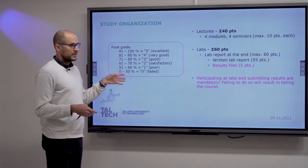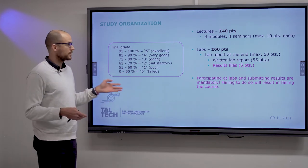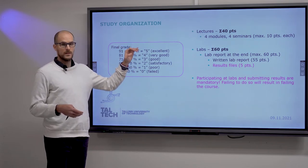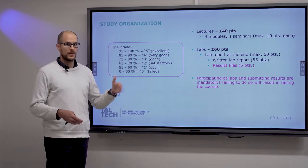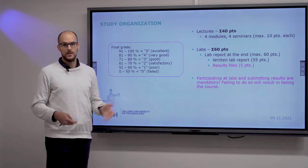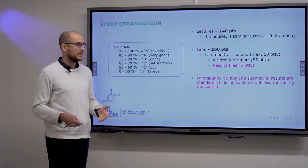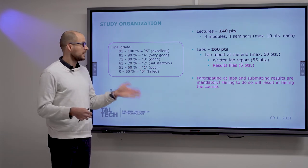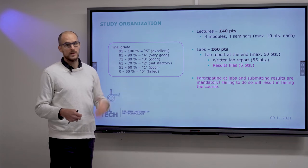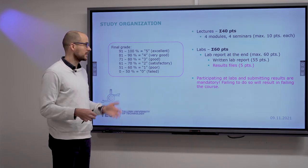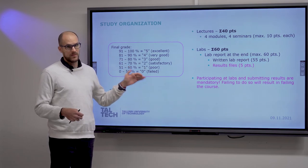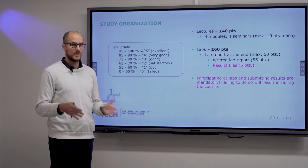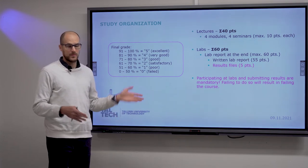Regarding evaluation, we follow the usual one-to-five scale. 40% of the final score comes from lectures, meaning four seminars where you present your own mini review of a topic of your choice from a list we offer — each worth 10 points. The formal labs module gives you 60% of your final grade: 55 points from the written lab report, which is a portfolio of your completed exercises, and 5 points for uploading all the results.